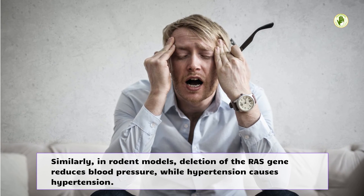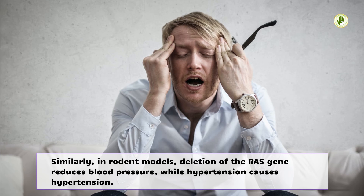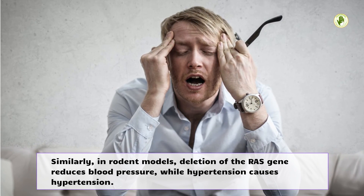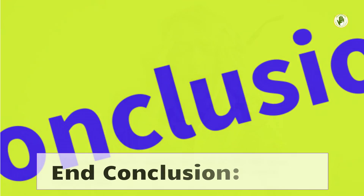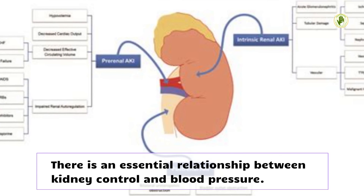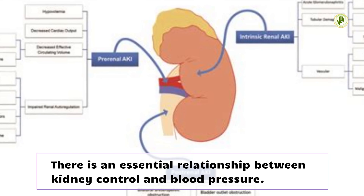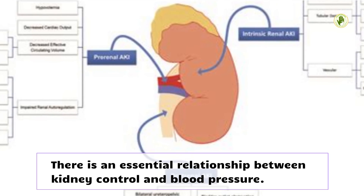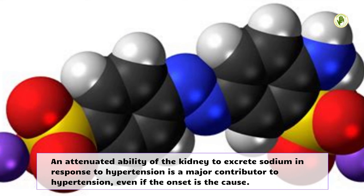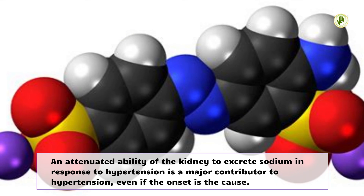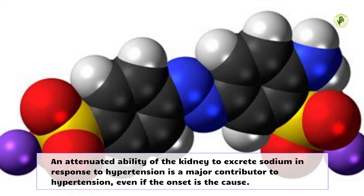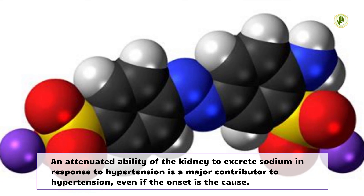Similarly, in rodent models, deletion of the RAS gene reduces blood pressure, while overexpression causes hypertension. There is an essential relationship between kidney control and blood pressure. An attenuated ability of the kidney to excrete sodium in response to elevated blood pressure is a major contribution to hypertension, even if the initial onset has other causes.